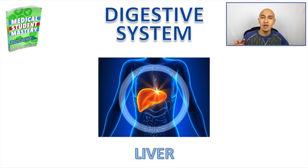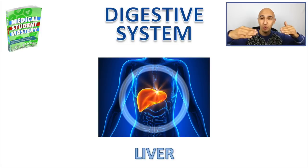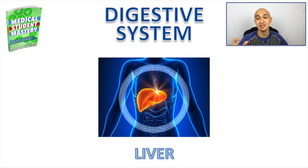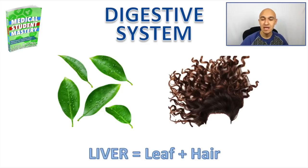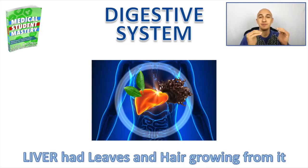Let's look at the digestive system — specifically the liver. There are a few bulges at the top portion of the liver, so I'll use those as locations. First, turn the name liver into an image: leaf for the 'liv' part and hair for the ending 'er'. So leaf and hair represent liver. I picture the liver having leaves and hair growing from it at its top portion.